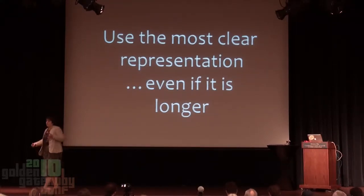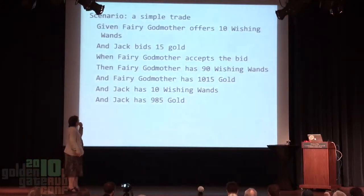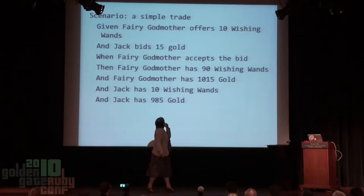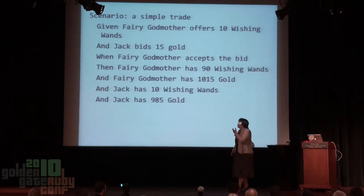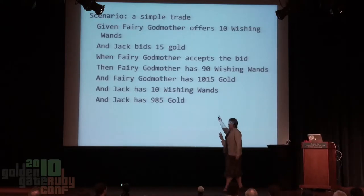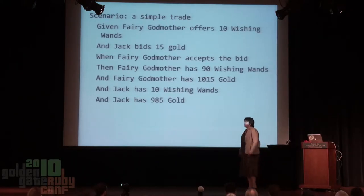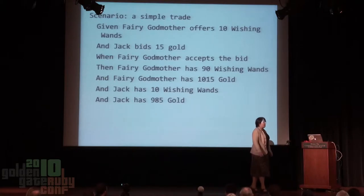There's another rule that doesn't come directly from Strunk and White, though I'm pretty sure they would agree with it: use the most clear representation, even if it's longer. Here's a pretty straightforward test — a simple trade. Fairy Godmother is going to put some wands on the market, Jack's going to bid on them, Fairy Godmother will accept Jack's bid, and then we've got expectations about money and magic wands. If you do financial transactions, the government gets cranky if you violate 'thou shalt not create or destroy money.' This test I would say is pretty readable — do you agree?